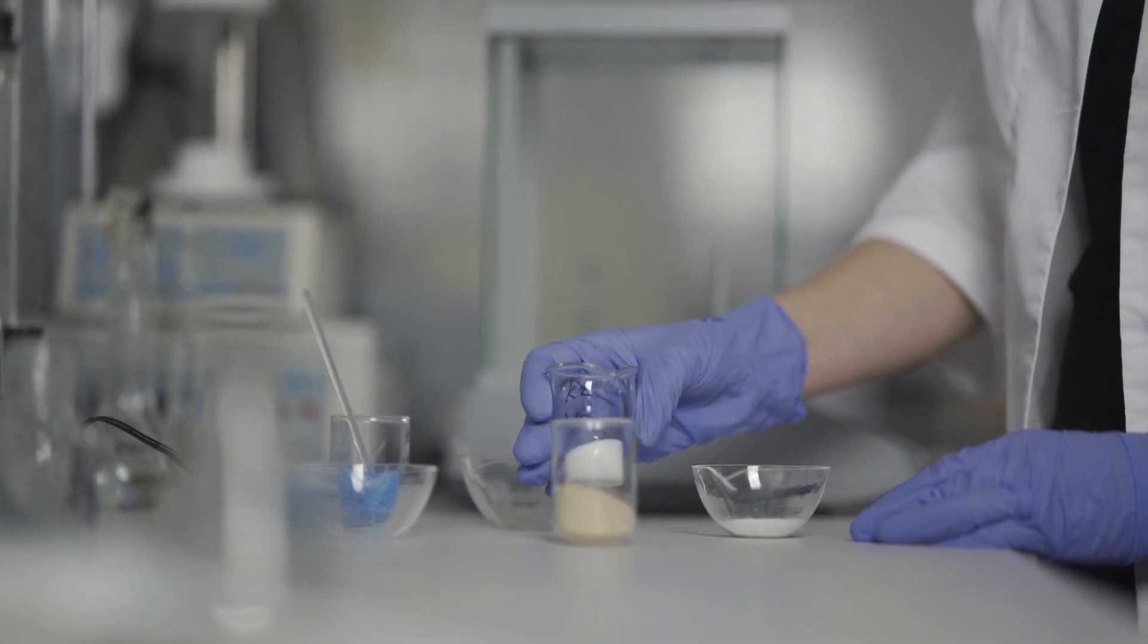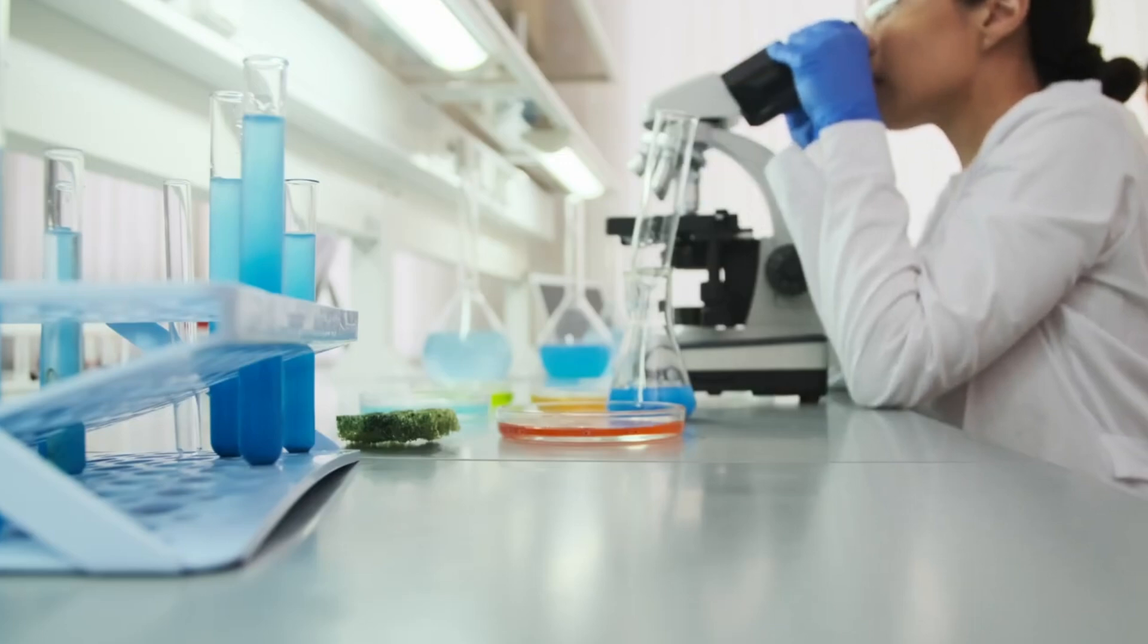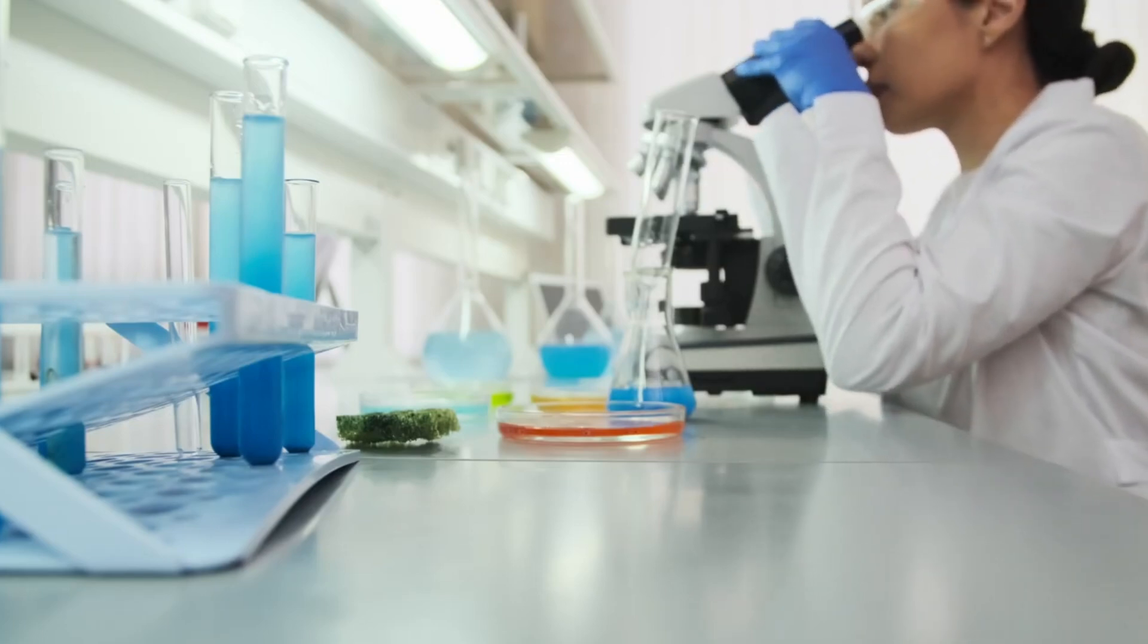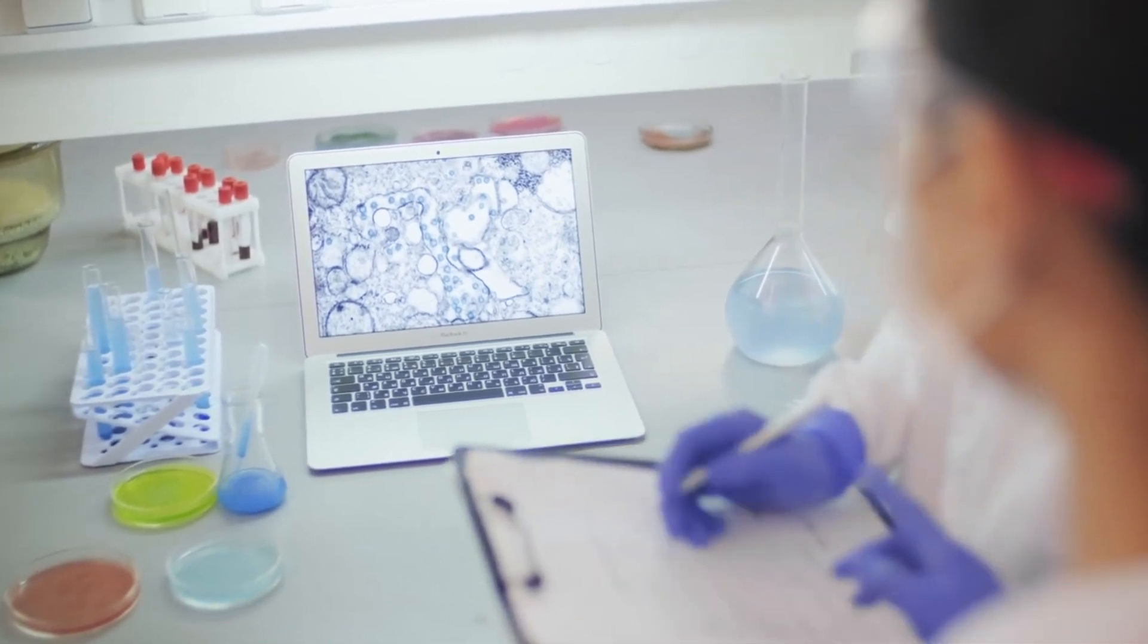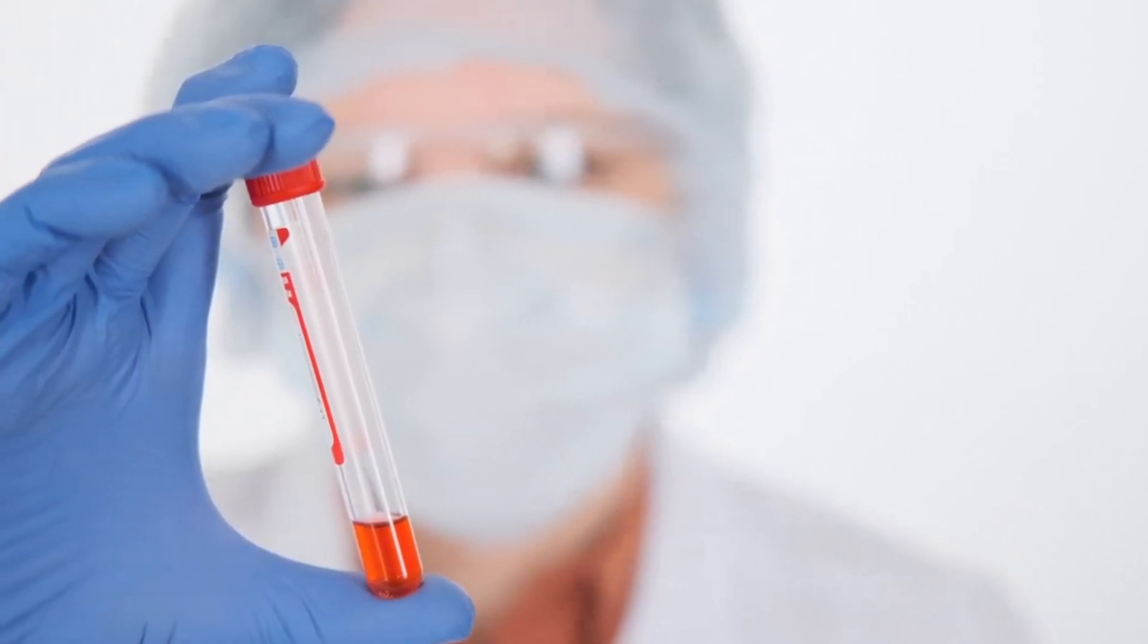Uranium-233 is a potential nuclear fuel, and its production from protactinium-233 offers a pathway for fuel generation in certain reactor designs. This aspect of protactinium's behavior in nuclear systems is critical for understanding reactor dynamics and fuel cycles.